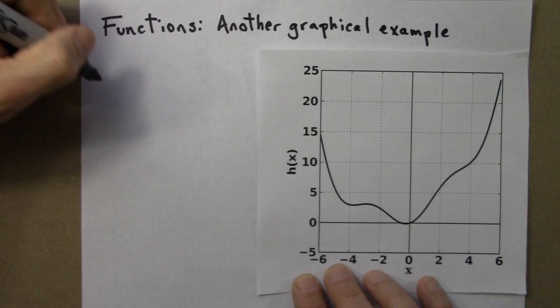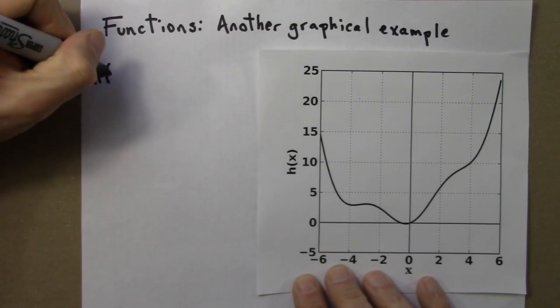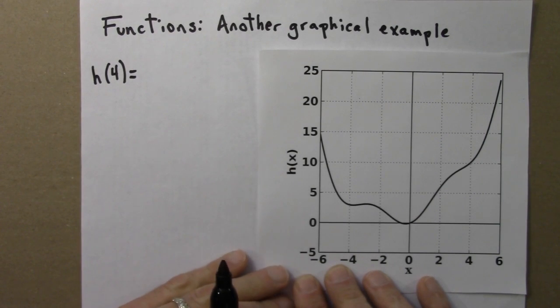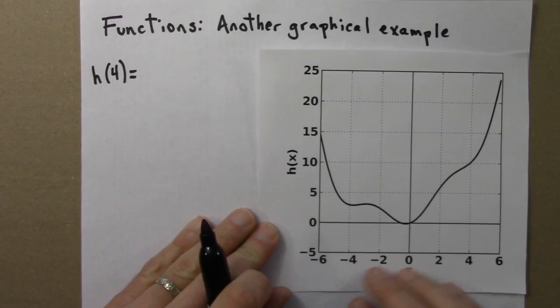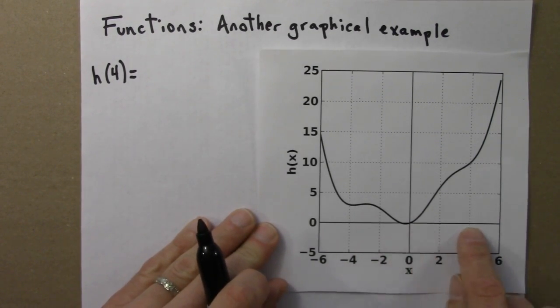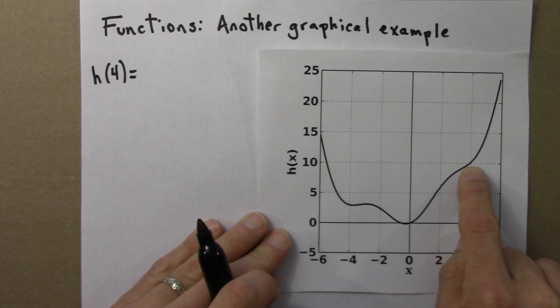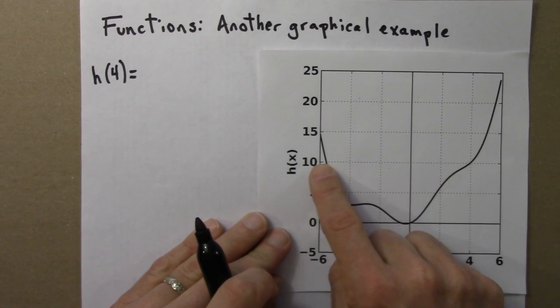Suppose we're interested in h(4). So if 4 is the input, what is the output? Alright, so the input value, that's down here, that's 4. And then I would say, what is h(x) if x is 4? That's what this curve tells me. The height of the curve is the value of h(4). And I would read that off and say, oh, it's around 10.